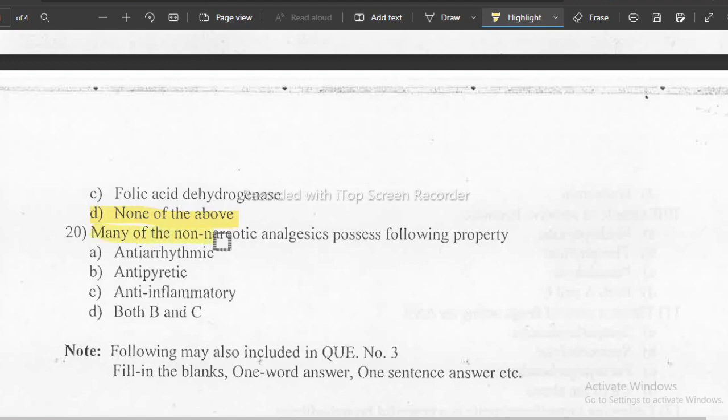Last question: many of the non-narcotic analgesics possess the following property. The correct answer is D, both B and C. That is, they are antipyretic and also anti-inflammatory. So this was the MCQs.